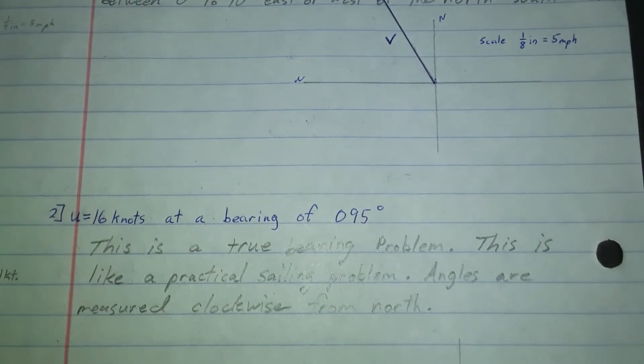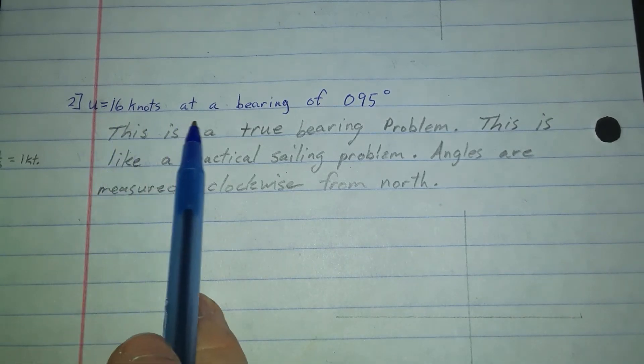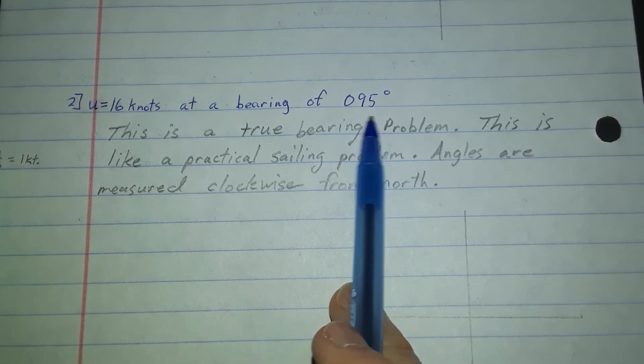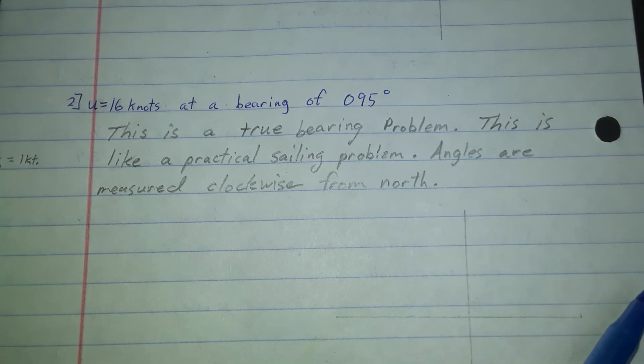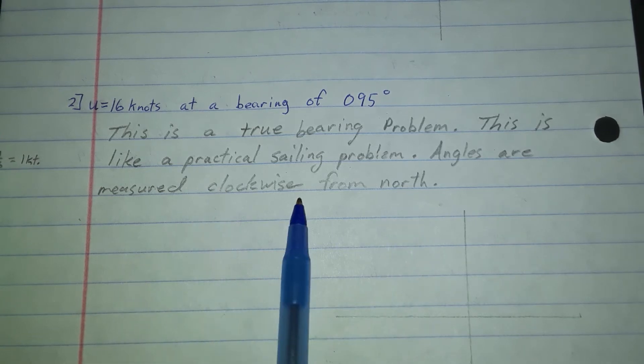Our givens are done slightly different. This time we have vector U is 16 knots at a bearing of 095 degrees. This is a true bearing problem, which means you start at north and you count clockwise, measuring your degrees. This is like a practical sailing problem. This is if you are doing paper and pencil navigation marks. This is something that is true to life that you would need to know.